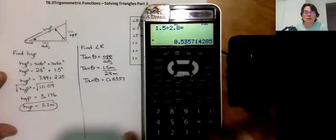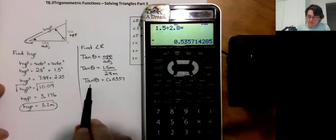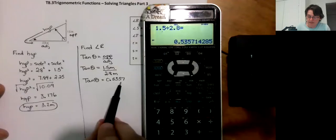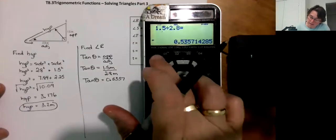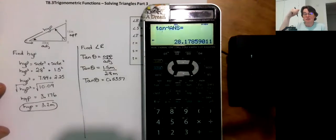0.5357. And then, but that's not my angle. Okay. First of all, it says tan theta is that. So that's the ratio. To get the angle, I need to go second tangent. And on my calculator, I can just hit equals. And it just puts the answer from the previous one in it. So I didn't have to retype that.